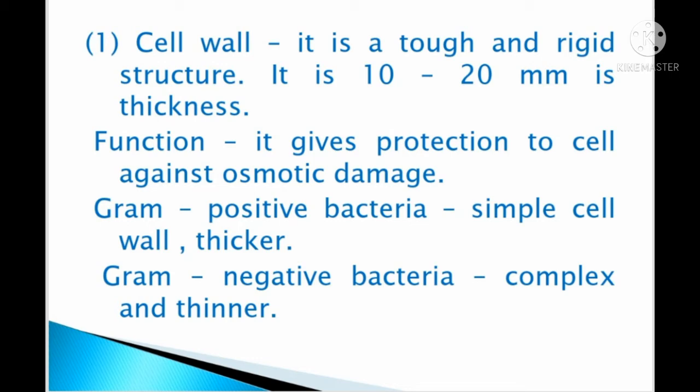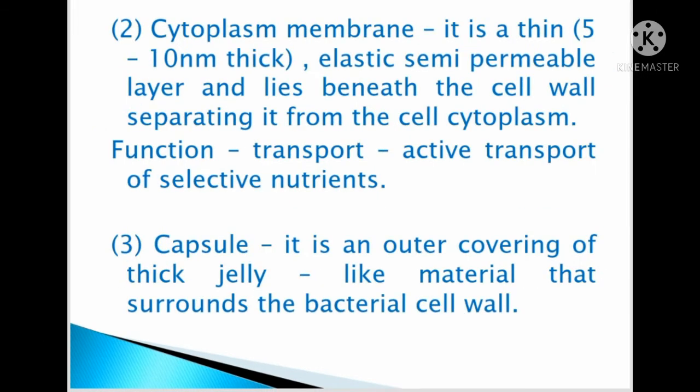Gram-positive bacteria consist of a simple and thicker cell wall. Gram-negative bacteria consist of a complex and thinner cell wall. The cytoplasmic membrane is a thin, 5 to 10 nanometer thick, elastic, semipermeable layer that lies beneath the cell wall, separating it from the cell cytoplasm. Its function is the active transport of selective nutrients.